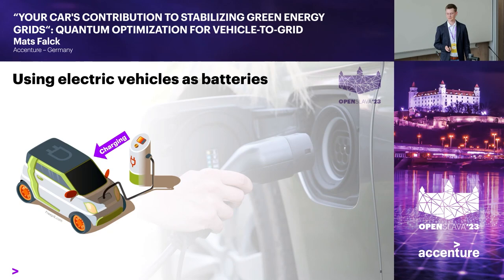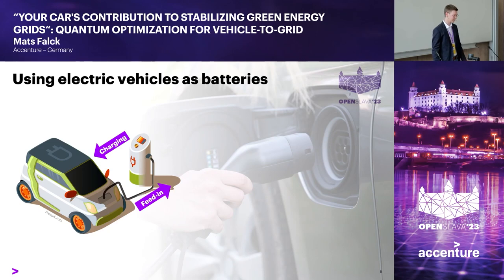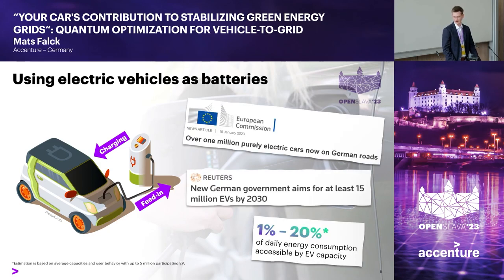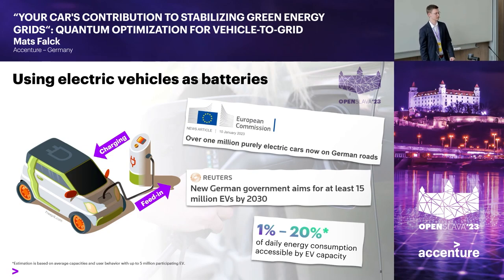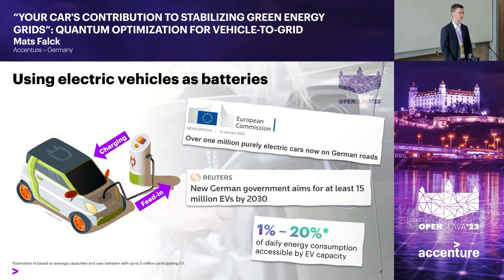This concept is vehicle-to-grid: not only does an electric car charge energy when needed, it may also feed energy from its battery back into the grid. This could be feasible because EV numbers are only increasing, and depending on your assumptions, you can arrive at numbers up to 20 percent of daily energy use provided by EV battery capacity — though infrastructure also needs to be ready for such a system.